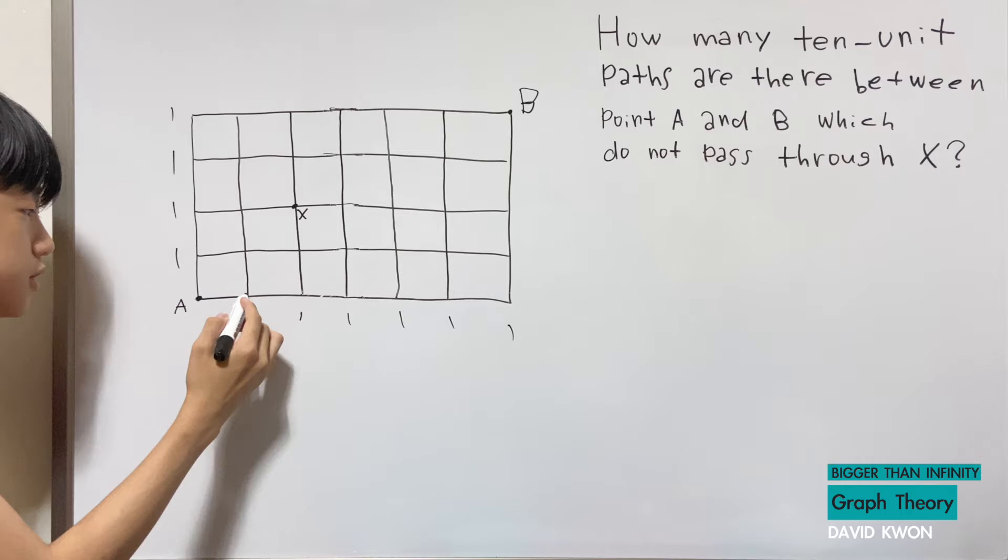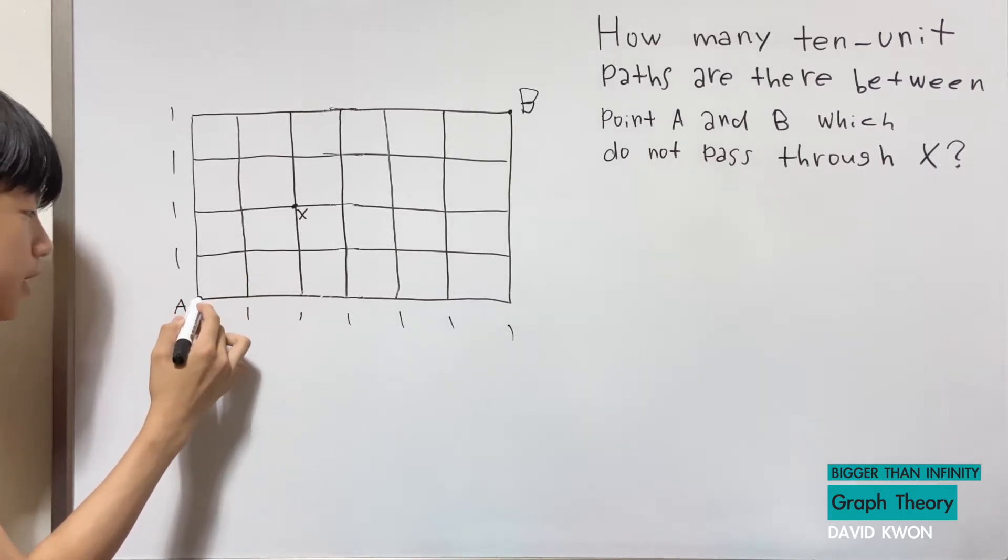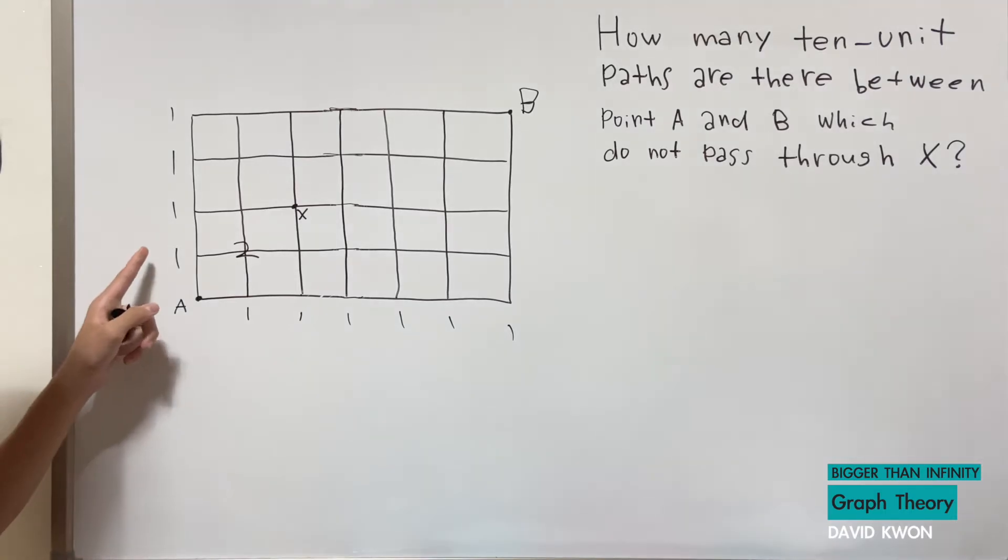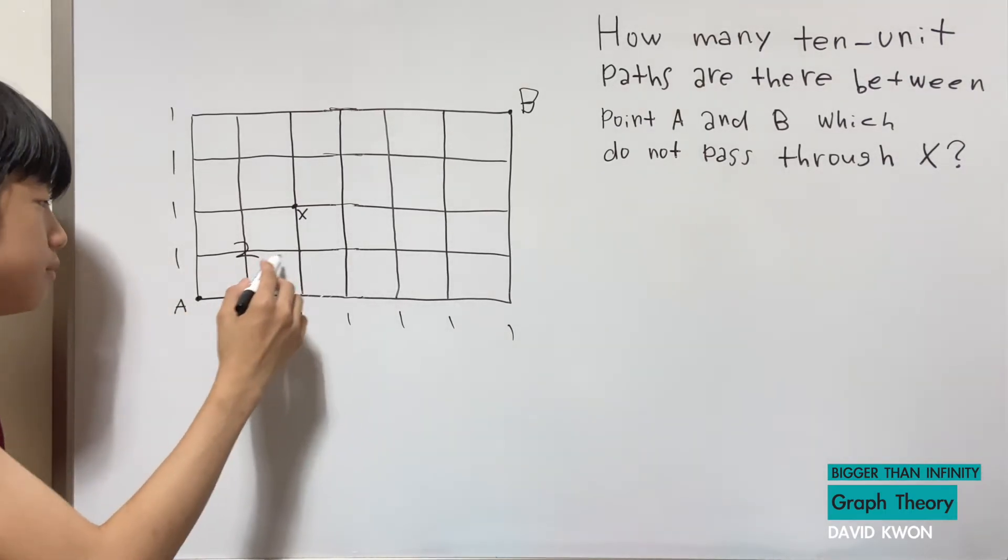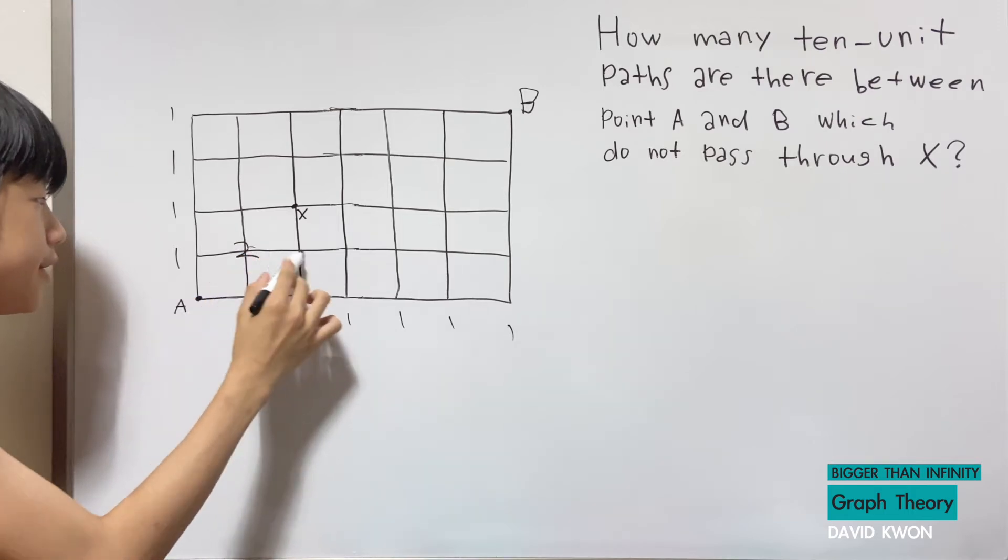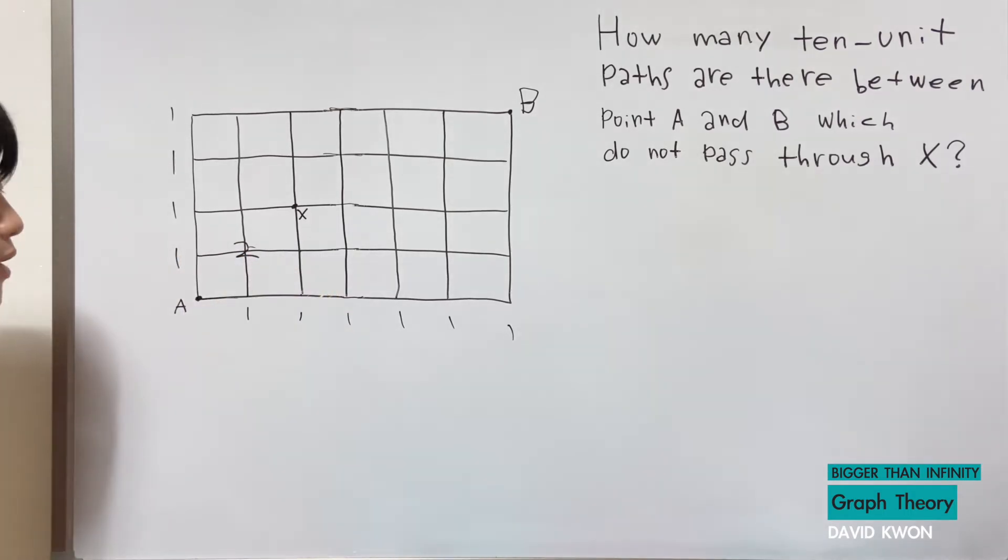Now if A wants to go here, that is two ways because A can go like this way and A can go like this way. So that's two, or just do one plus one. And here that would be three ways because we have one way, two way, third way, or we can do two plus one which is three.